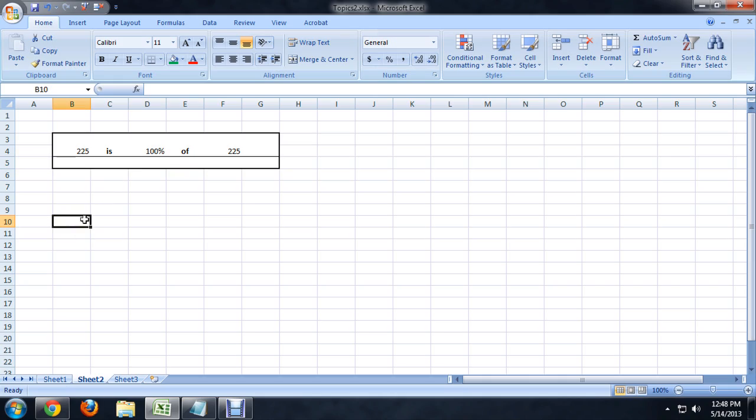Now I'm going to show you how to build it pretty quick. We're just going to put a random number, let's say 85 is blank, because we'll fill that in with a formula, of, oh, let's say 560.